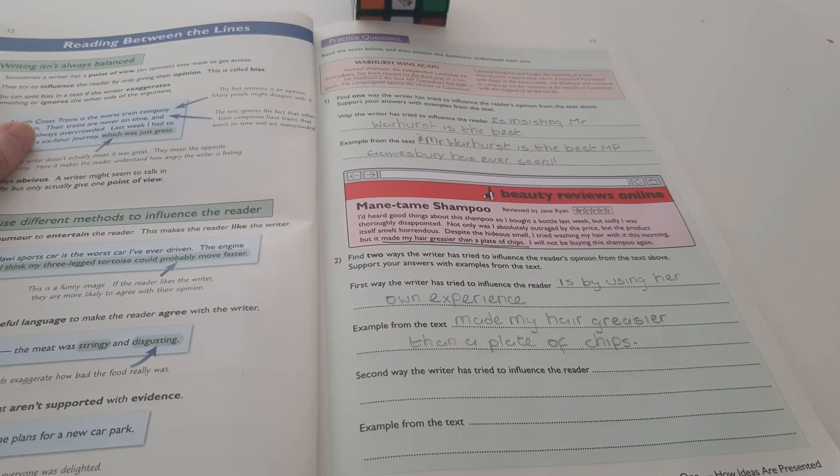First way the writer has tried to influence the reader is by using her own experience, example from the text. Made my hair greasier than a plate of chips. Second way the writer has tried to influence the reader is I will not be buying this shampoo again.